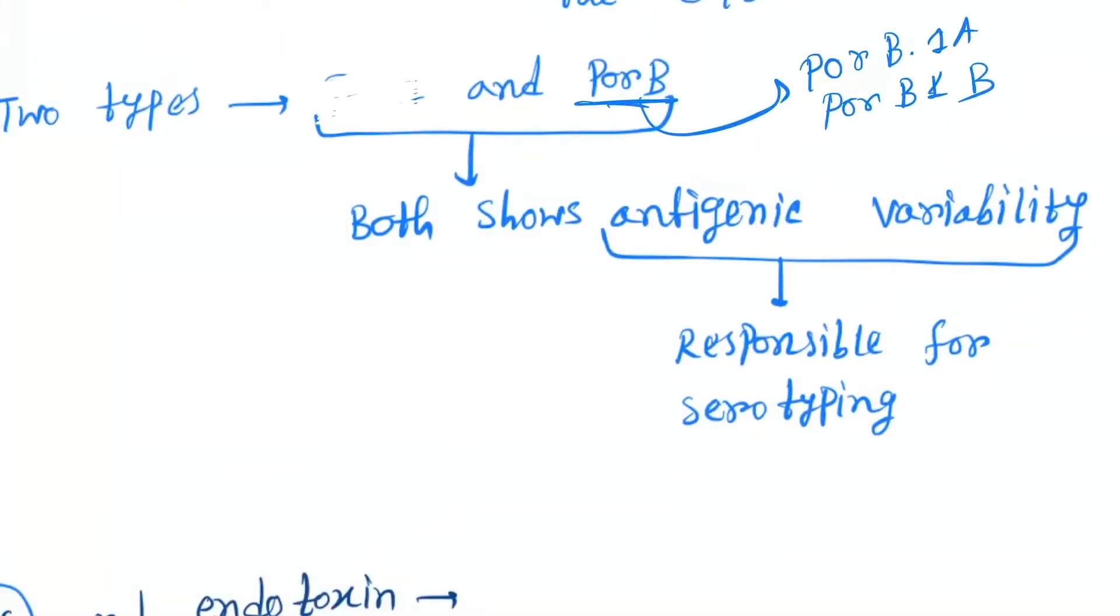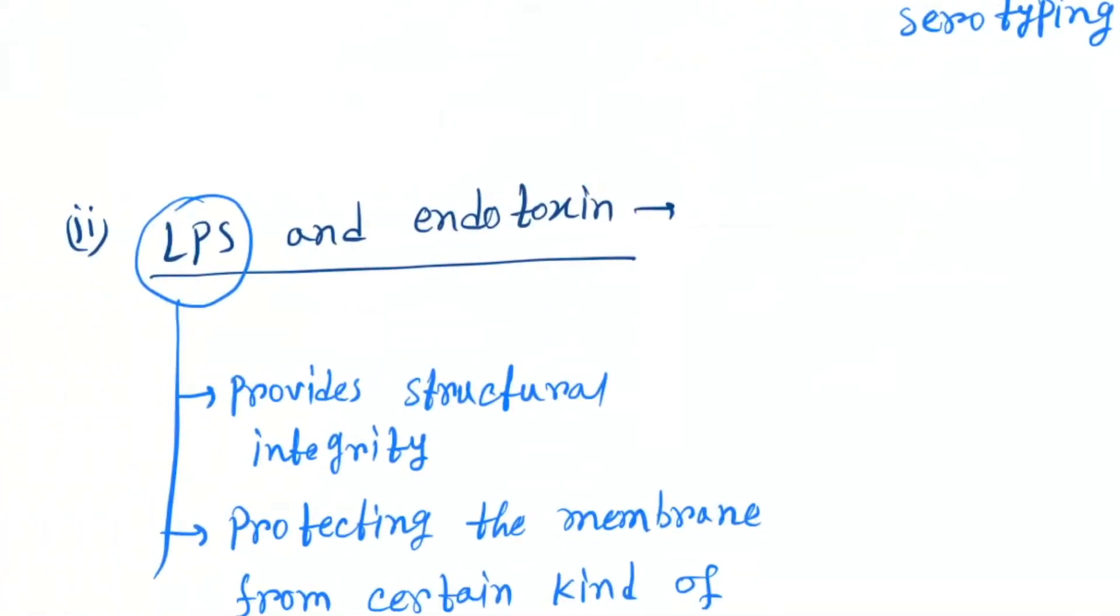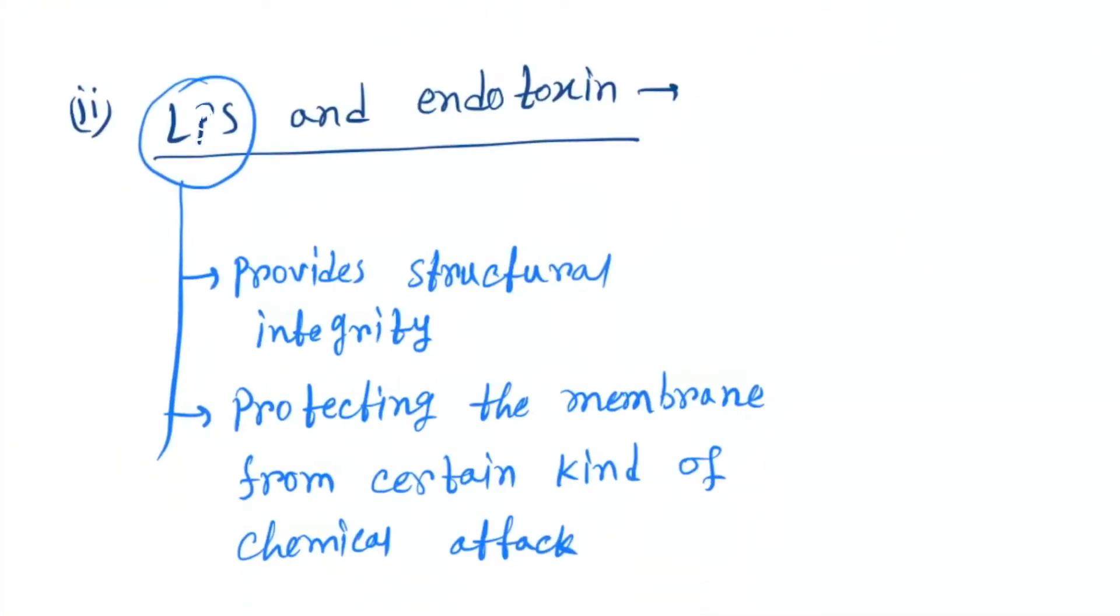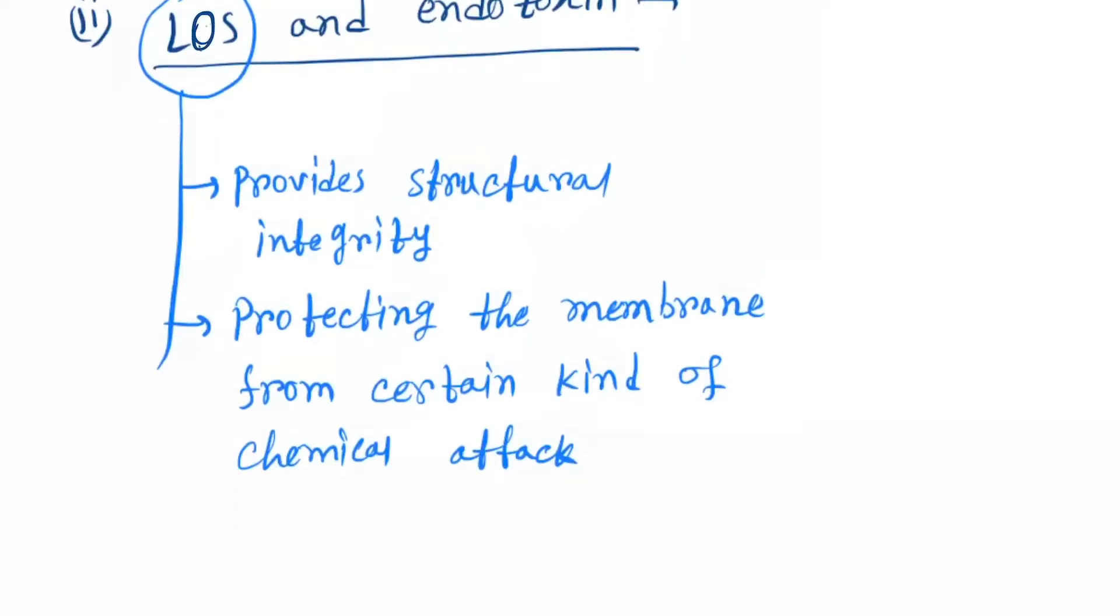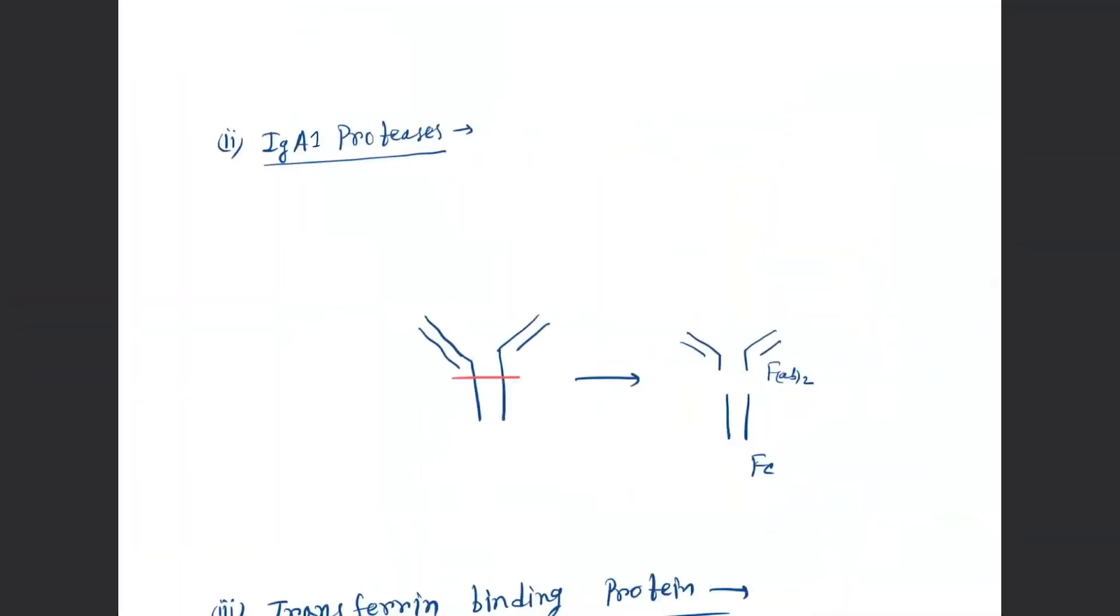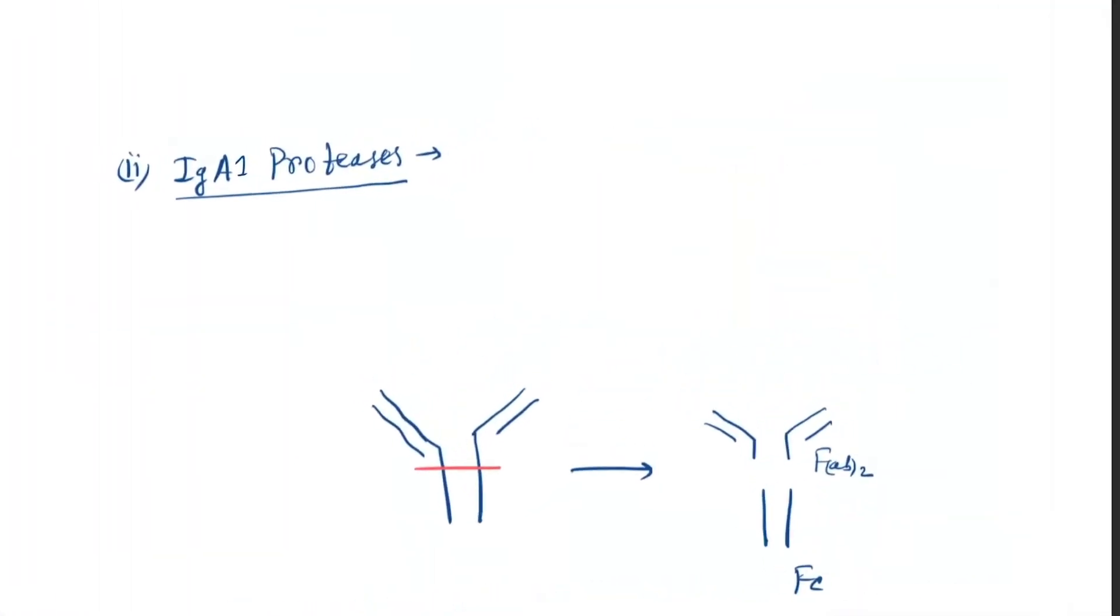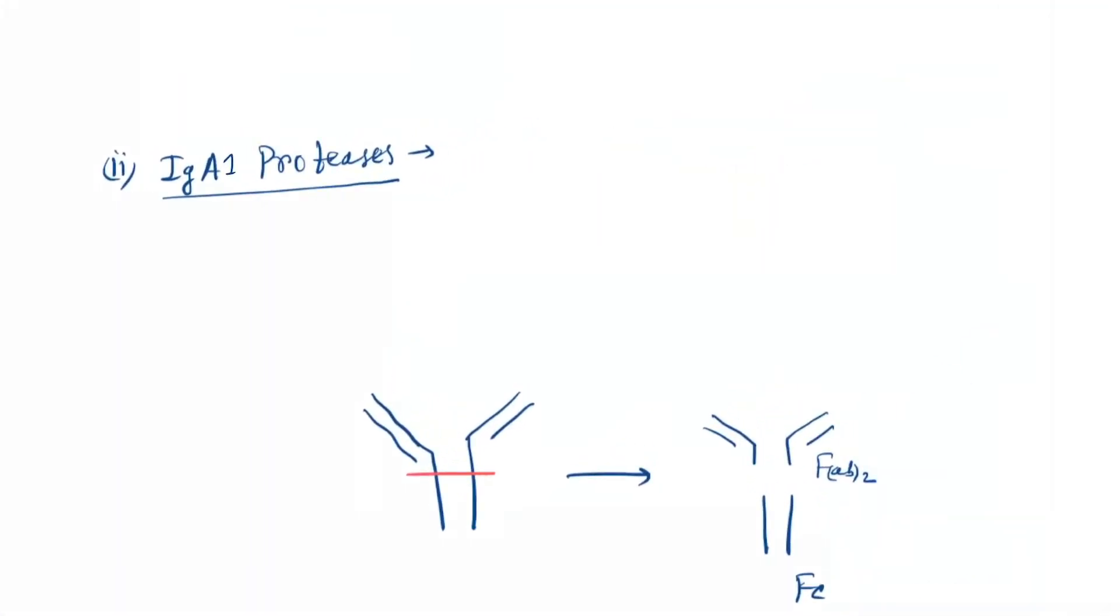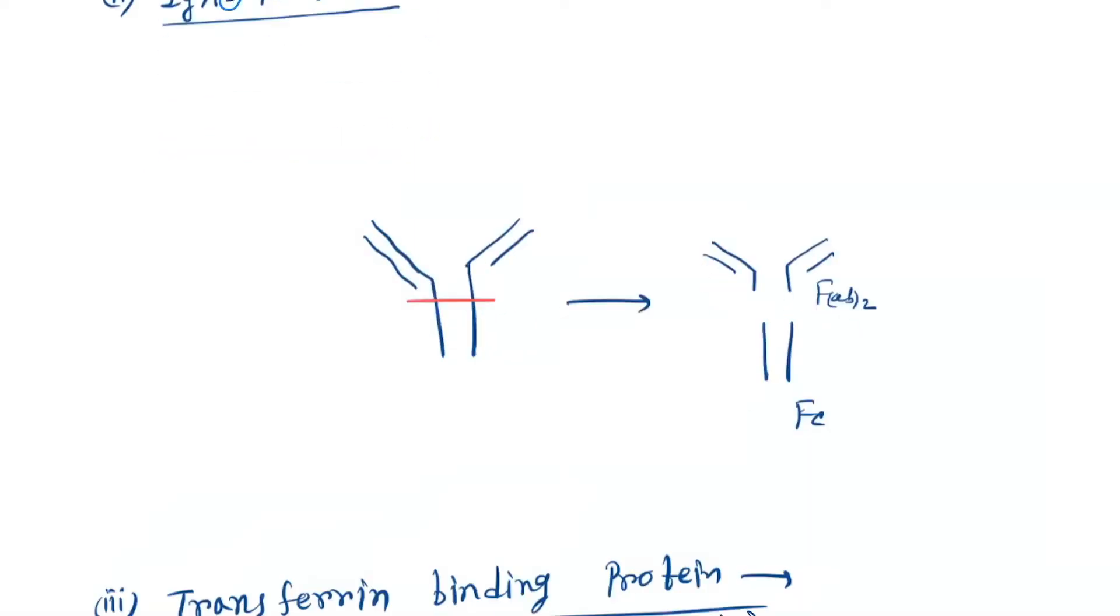They also show antigenic variability. Now come to LPS. They are not LPS, they are LOS. They provide structural integrity, protecting the membrane from certain kinds of chemical attack, and also act as endotoxin. Endotoxin mechanism is discussed in detail in Neisseria meningitidis. IgA proteins - here it is IgA1. You can see this portion and the antibody will separate like this.